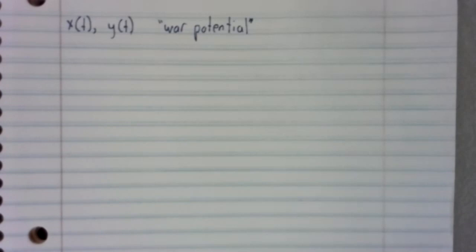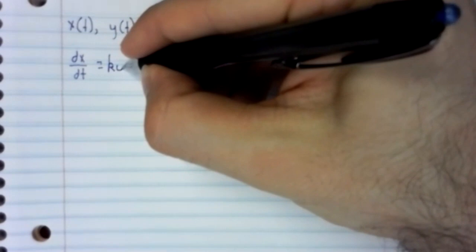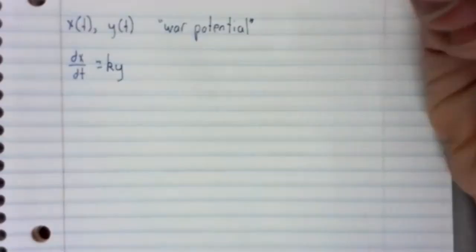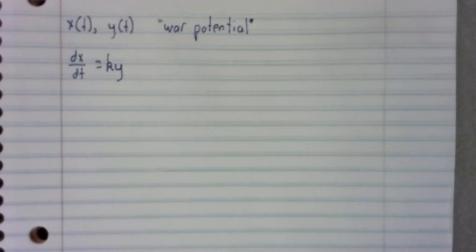Let's build dx/dt. There will be a ky term. If nation y is building up its military, if y is large, then nation x will quickly build up its own military.